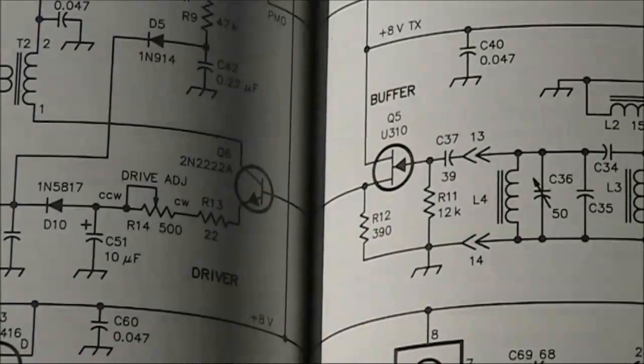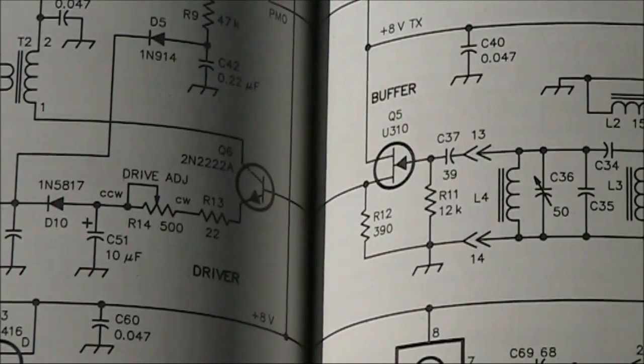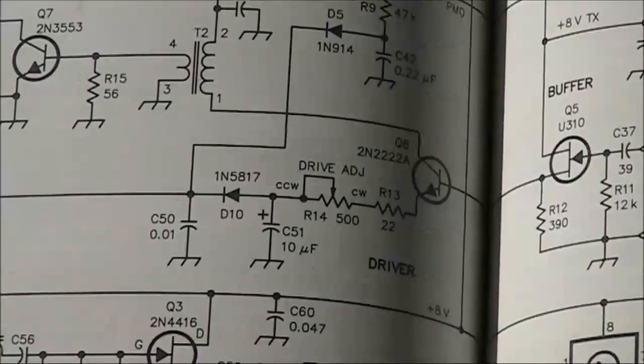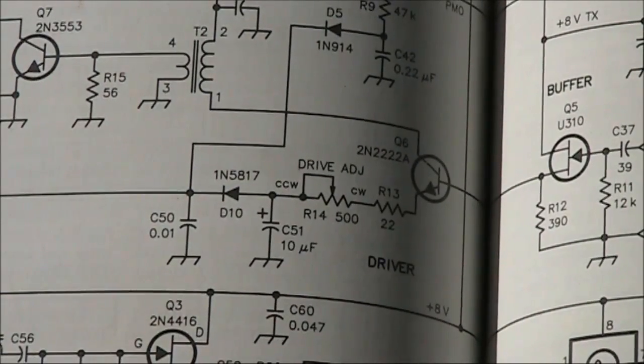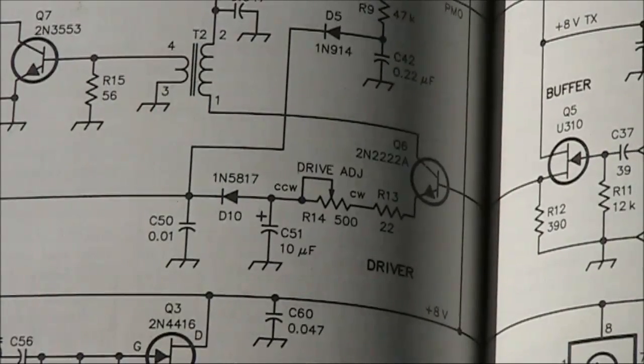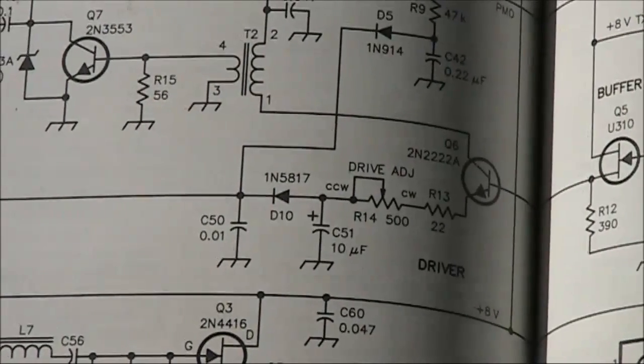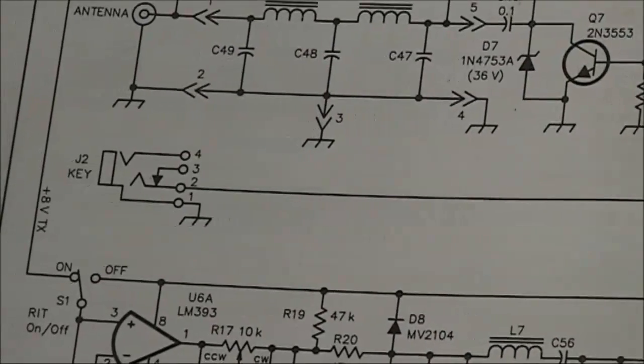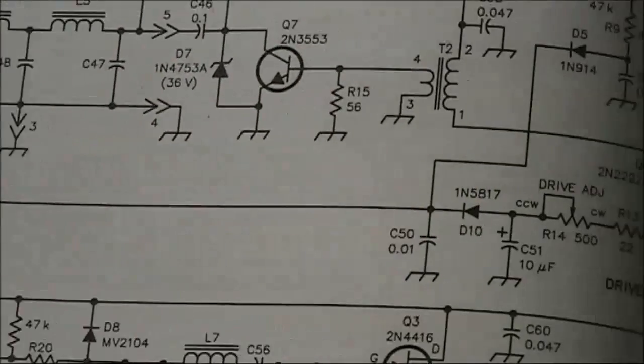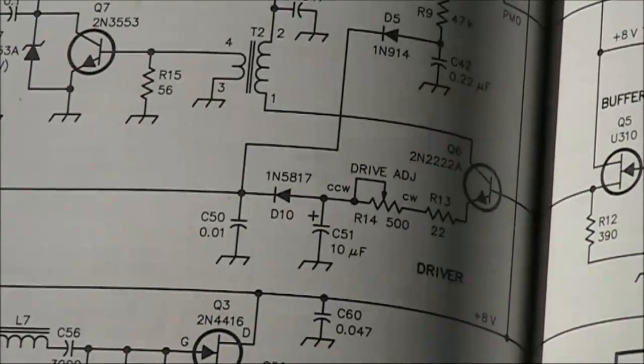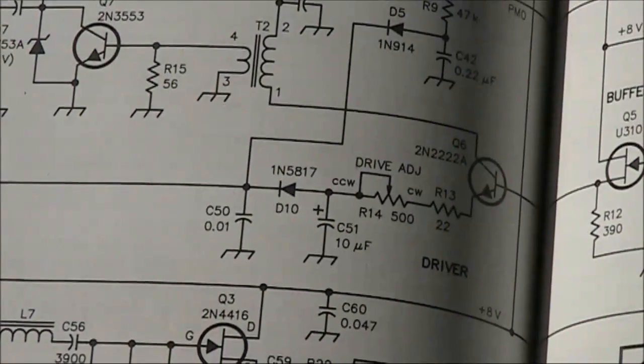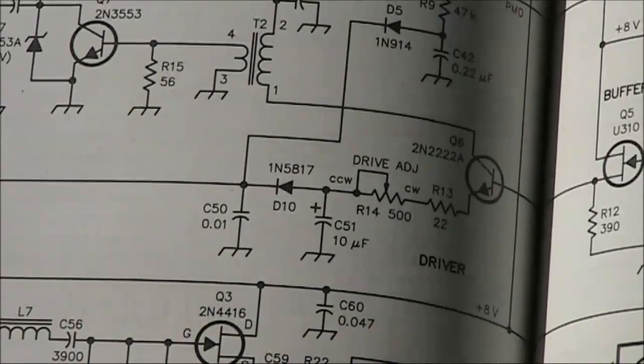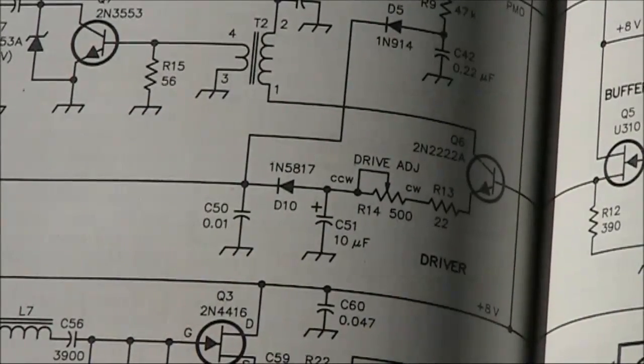A buffer amplifier, which I used an MPF102. And the driver, which comprises a 2N2222. Now the keying in their case, if we have a look a bit further along, that's the key socket. The keying is done here by shorting the emitter circuit to ground via diode and resistors.